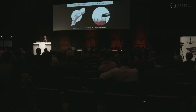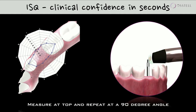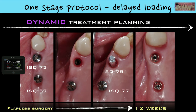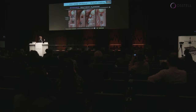To measure implant stability, we apply the OSTEL technique — attaching the smart peg and measuring from two different angles, 90 degrees apart. The instrument gives the highest and lowest value; a very low value would be a warning sign guiding the clinical decision. With a flapless surgery, the first implant has a quite high ISQ value, but the second implant — more distal, in the area where the tooth was extracted — has a lower ISQ value. This tells me not to load that implant; no early or immediate loading, so we wait for osseointegration and healing.